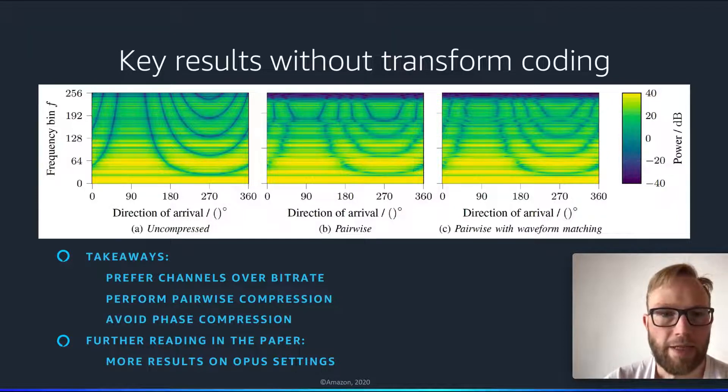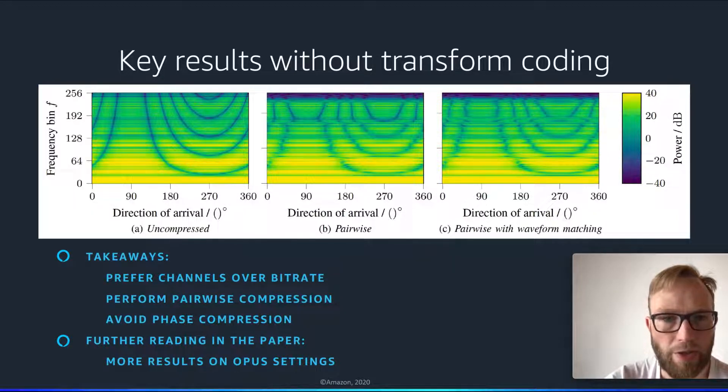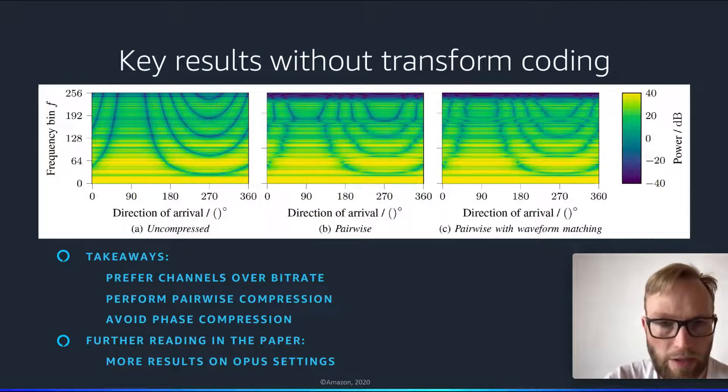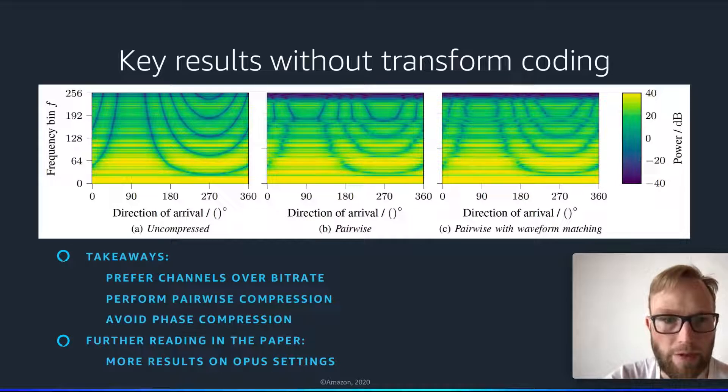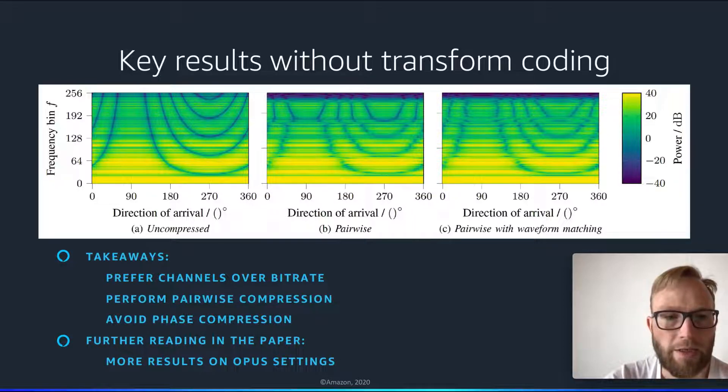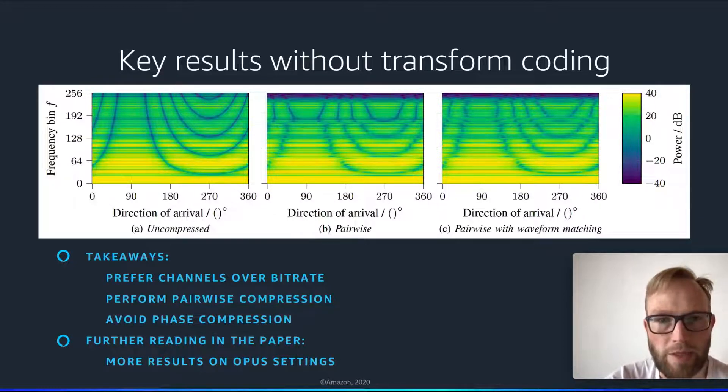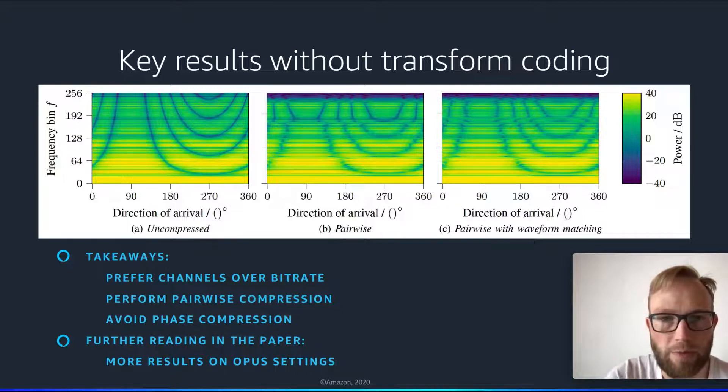The key results first of all are that Opus compression can distort phase information quite severely, which can be restored if we avoid parts of the phase compression aspects. And another key aspect is that it is always better to use more channels than to increase the bitrate per channel. You can find additional hints on setting optimal Opus compression parameters in the paper.